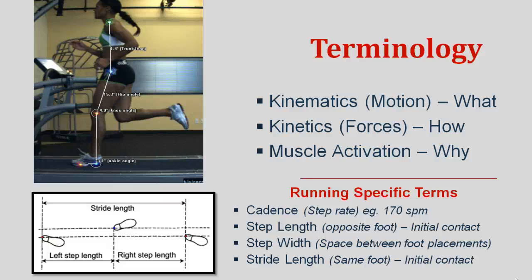EMG examines how muscles control the kinematics and kinetics. There are a few specific terms used in running. The first is cadence or step rate — normally when walking you take around 100 to 120 steps per minute, and when running it increases to 170 or more. A cadence of 180 and above is generally considered favorable. The next key term is step length — the distance between the initial contact of one foot and the opposite foot. Stride length is the distance between the initial contact of the same foot across two consecutive cycles.